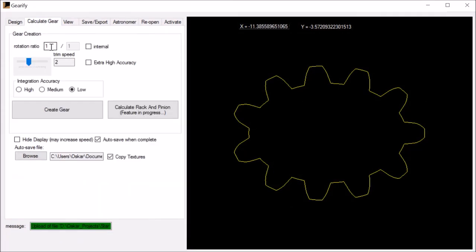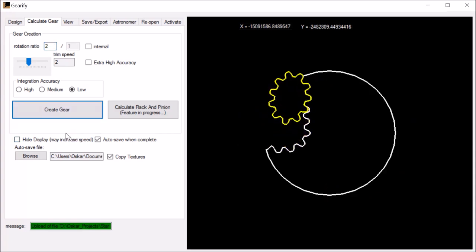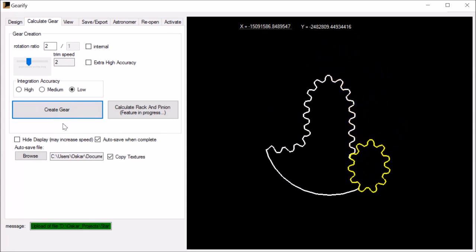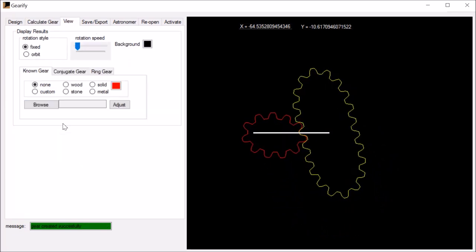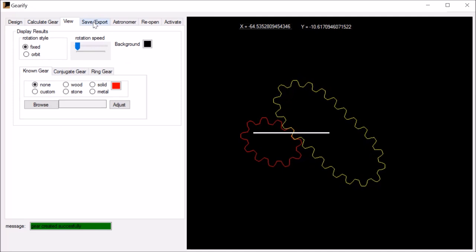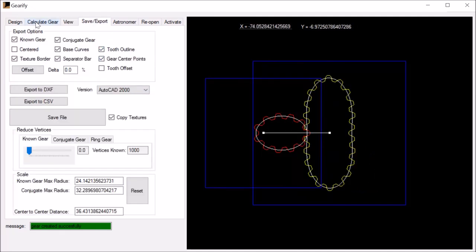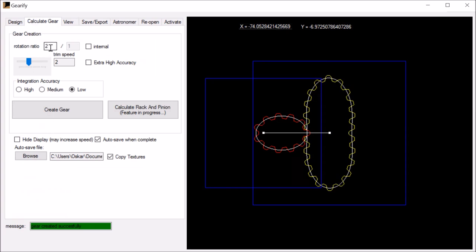Now we're going to calculate the gear. Instead of having one to one, we go to two to one. We press calculate gear. And presto, there we have the two to one gear set. There we are. And with save export, I can export this to my CAD program and get it laser cut.